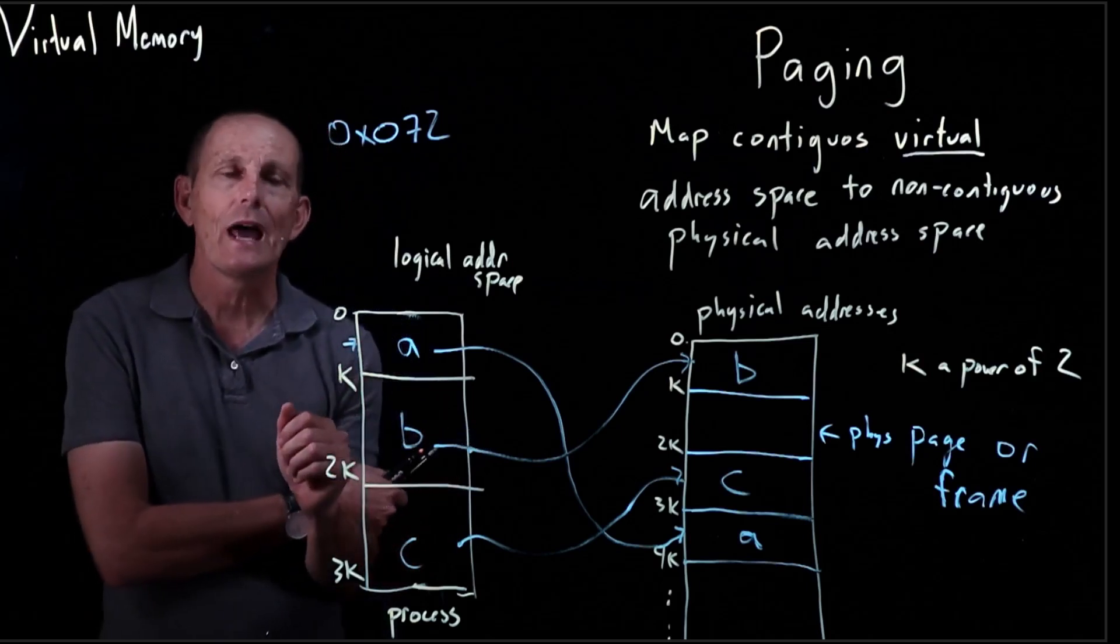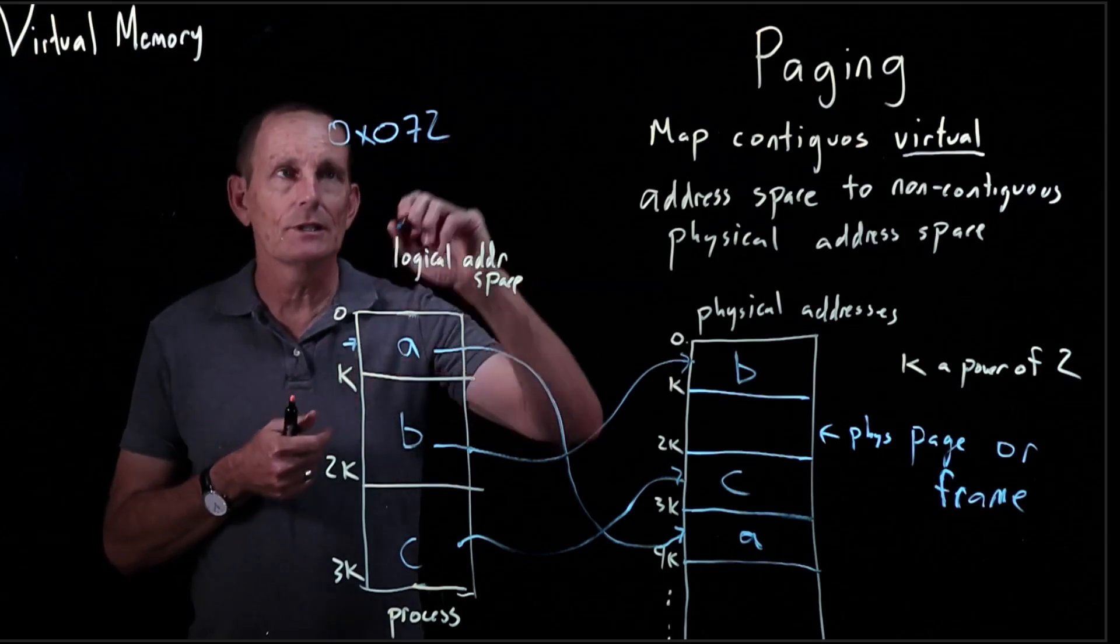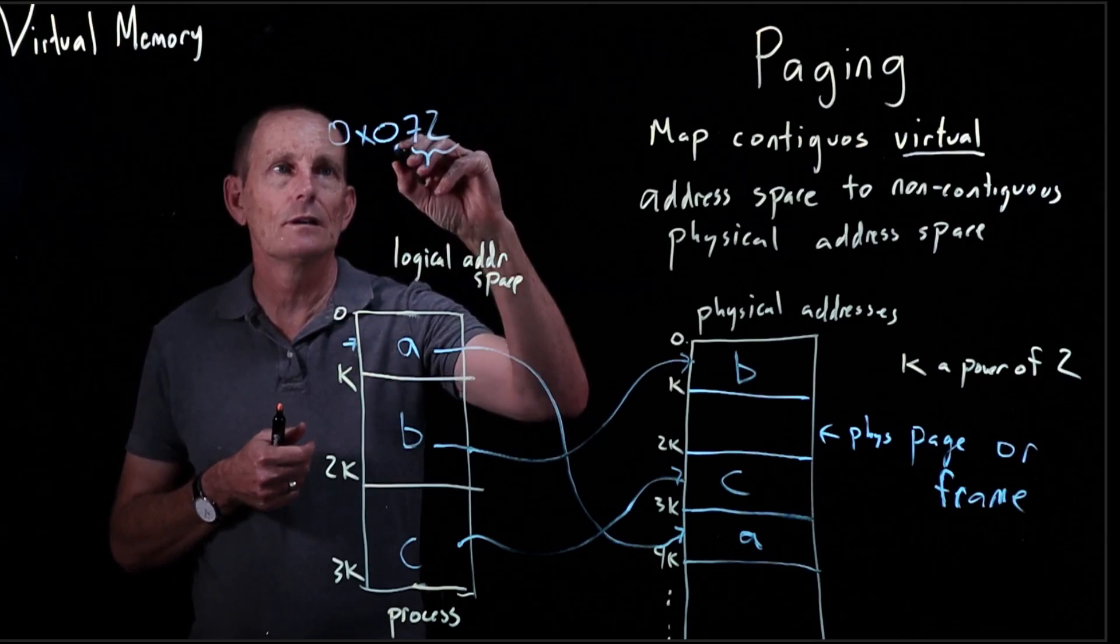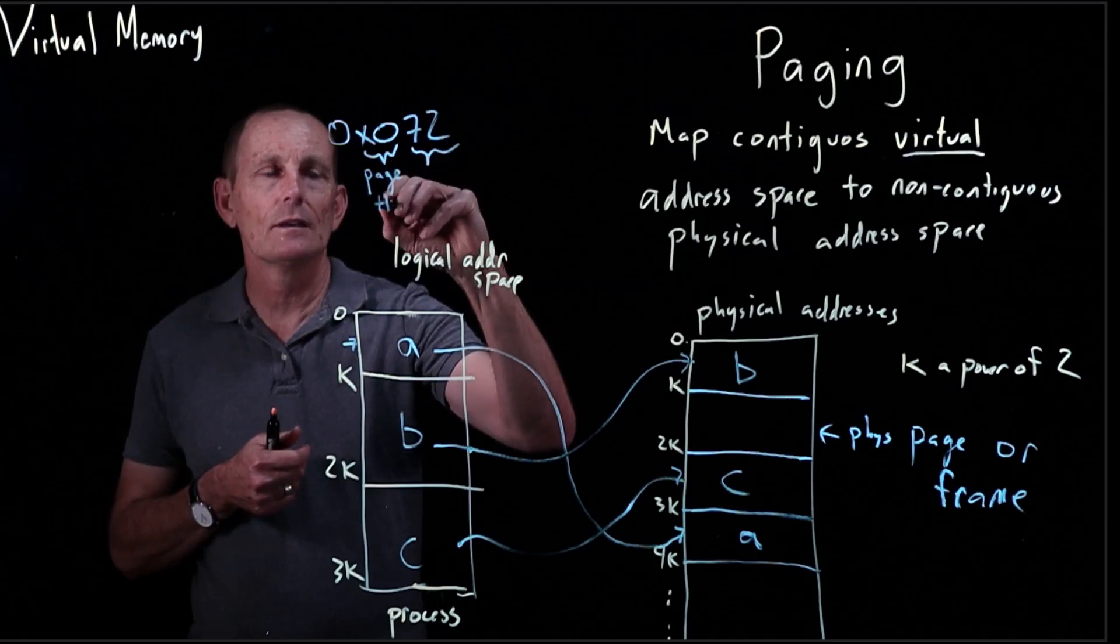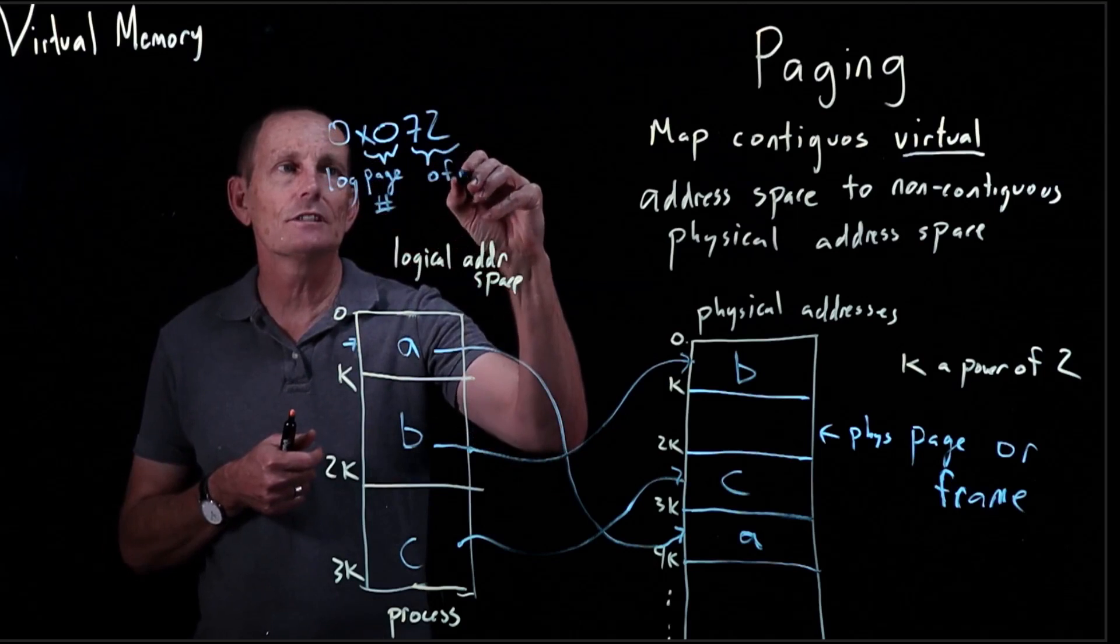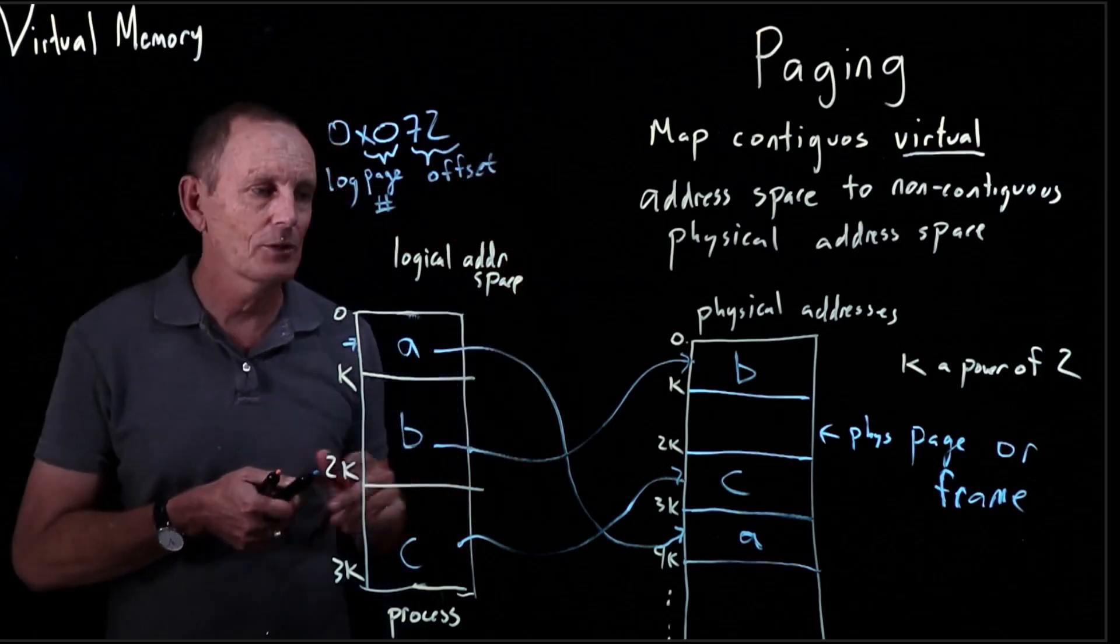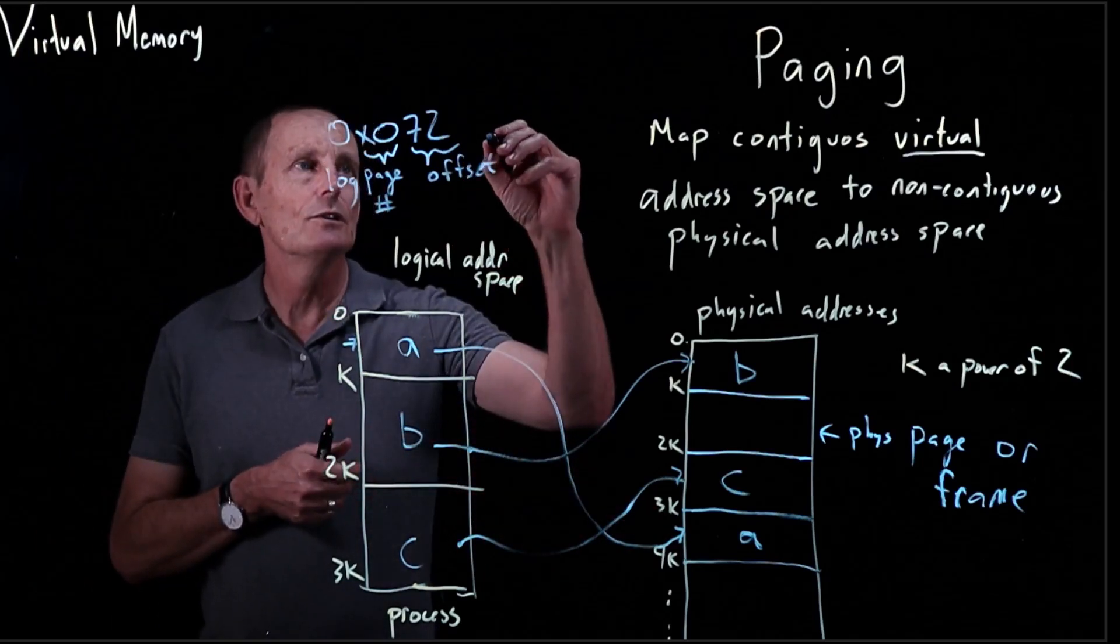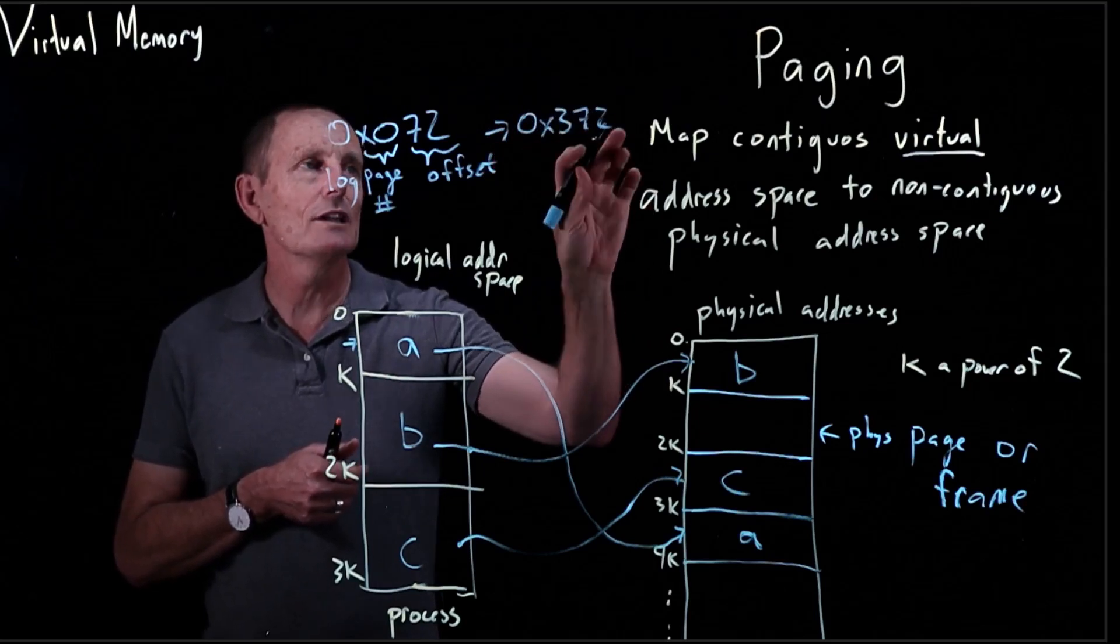So in this case, what would happen is we'd say, okay, we have 0x072. If we look at this, this is the page number - the logical page number - and this is the offset within the page. This would get converted via this mapping to 0x372. That is, we'd maintain the same offset, but the logical page number would be replaced with the physical page number of 0x3.